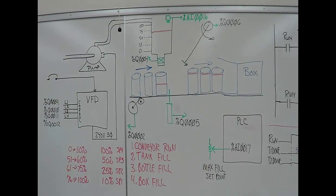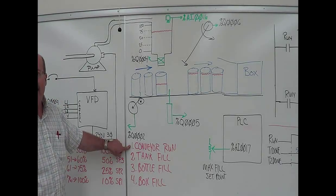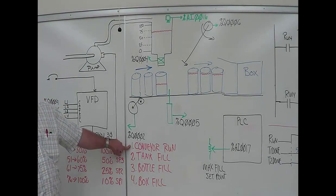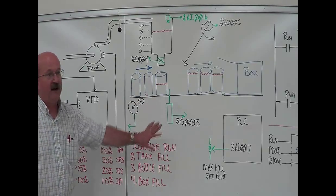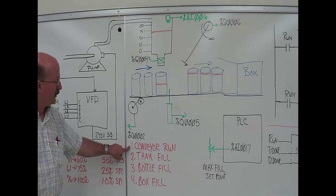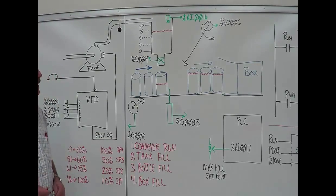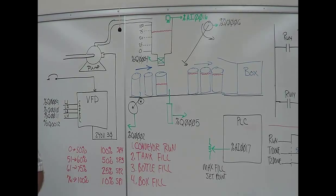There are links between those. The conveyor run will start and run everything. Nothing happens unless the conveyor is running. The tank fill is independent of everything else. The only input into your tank fill is your set point, your tank level, and if the conveyor is running.